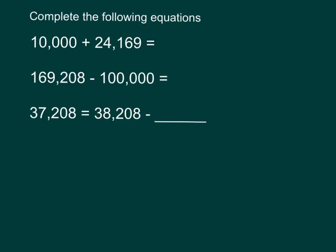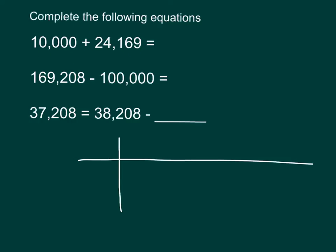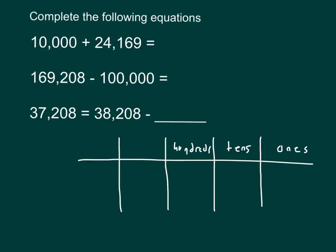Here we're asked to complete the following equations — let's work on one problem at a time. The first problem is 10,000 plus 24,169, which is asking us to find 10,000 more than this number — a sum, which is the answer to an addition problem. We'll set up our place value chart and label it, making sure we have five places: ones, tens, hundreds, thousands, and ten thousands.